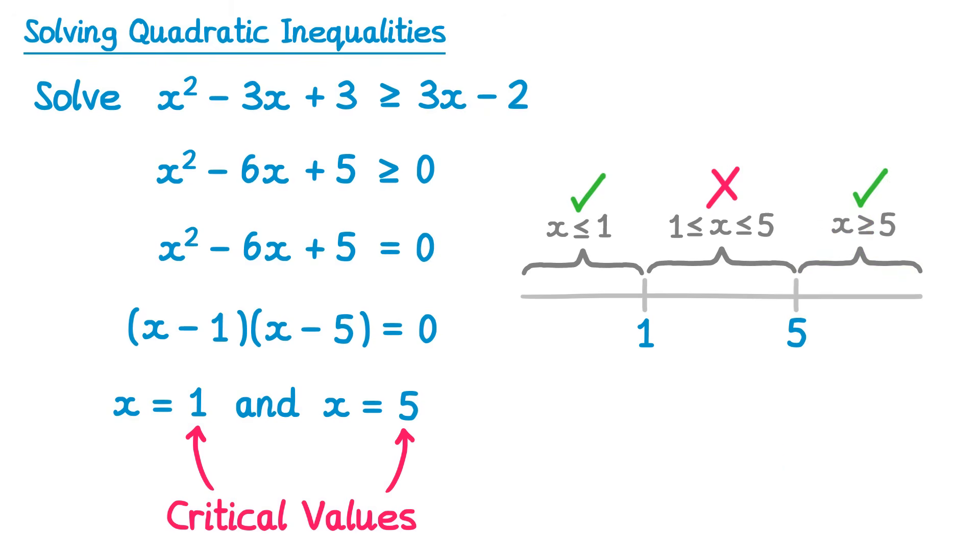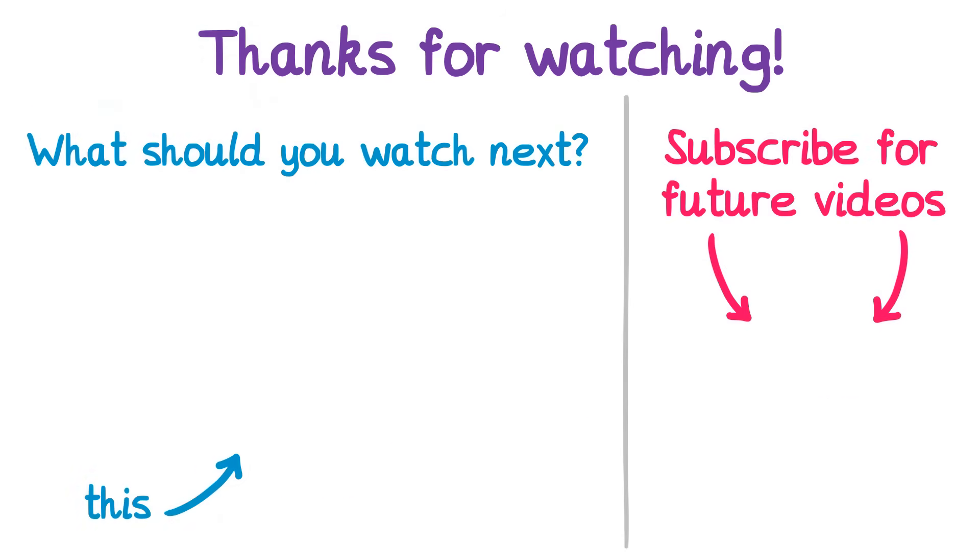What you now do is take any of the sections that have a tick on them and write them down as part of your solution. Remember, when we have more than one inequality, we'll use the word or. Thank you for watching this video, I hope you found it useful. Check out what I think you should watch next, and also subscribe so you don't miss future uploads.